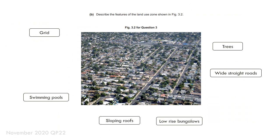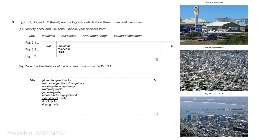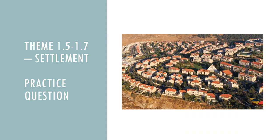For example: 'Describe the features of the land use zone shown in figure 3.2.' Looking at the image, you can see it's arranged in grids, there are lots of swimming pools, sloping roofs, very low-rise bungalows, lots of wide straight roads, and trees. This gives you the clue that it is a residential area. With all those points, you can see they tick all the mark scheme boxes really well.